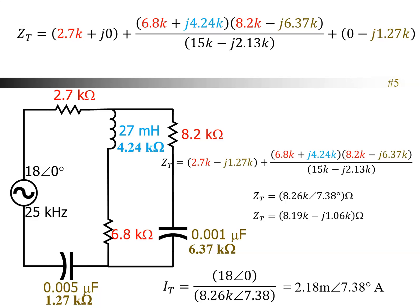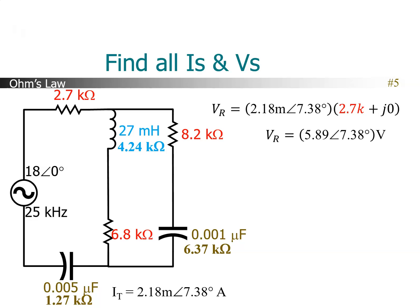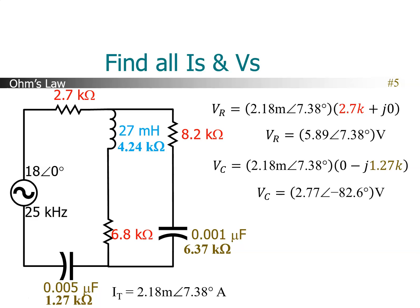That's the total current, which happens to be the current through the 2.7K resistor and through that 0.005 microfarad capacitor. Next we're going to find the voltage across that 2.7K resistor — that's simply Ohm's Law, the total current times the Z of that resistor, 2.7K + j0. That gives us the voltage across that series resistor: 5.89 ∠7.38. I can do the same thing with the capacitor on the bottom: total current times the Z of that capacitor, 0 − j1.27K. That gives us the voltage across that bottom capacitor: 2.77 volts at angle −82.6.